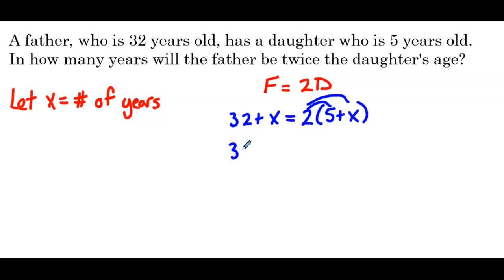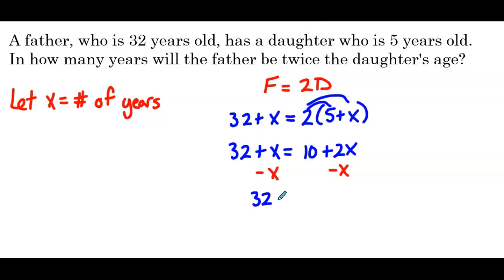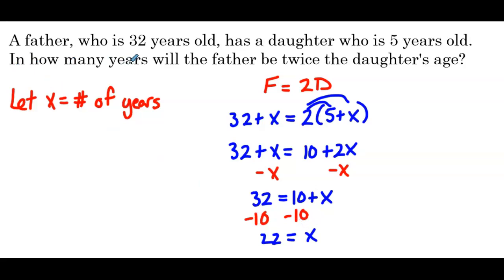We distribute the 2, giving us 32 plus x equals 10 plus 2x. Subtract x from both sides: 32 equals 10 plus x. Subtract 10 from both sides and we get 22 equals x. So in 22 years the father will be twice the daughter's age.